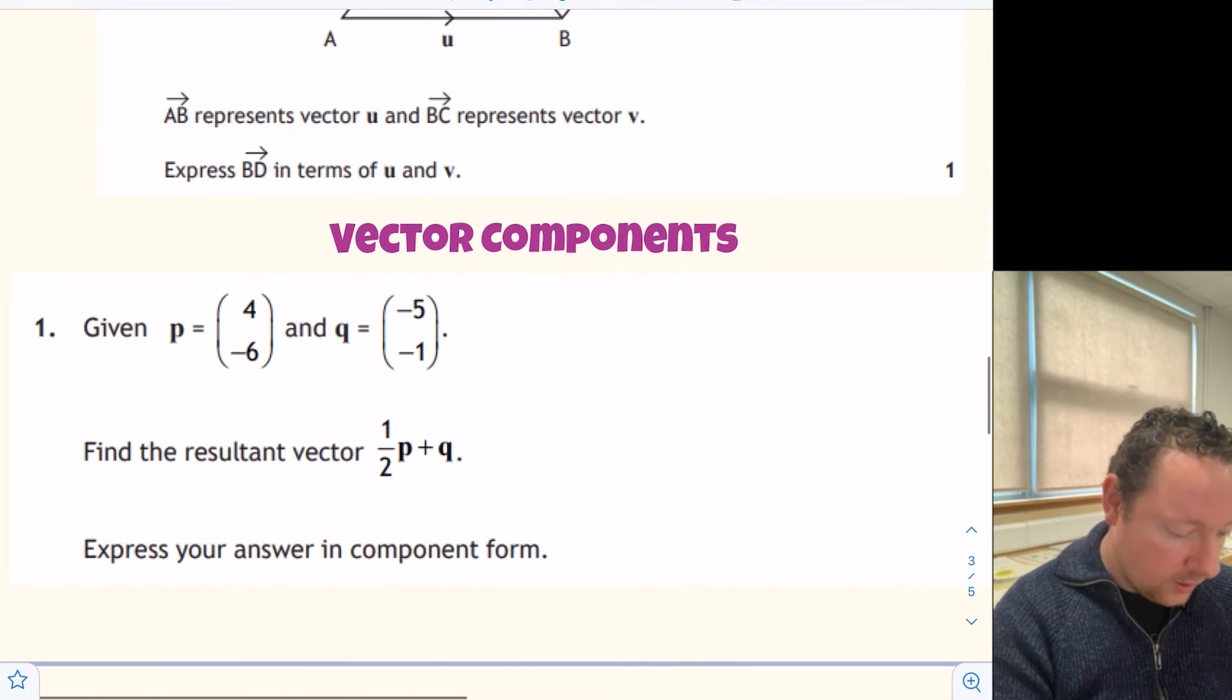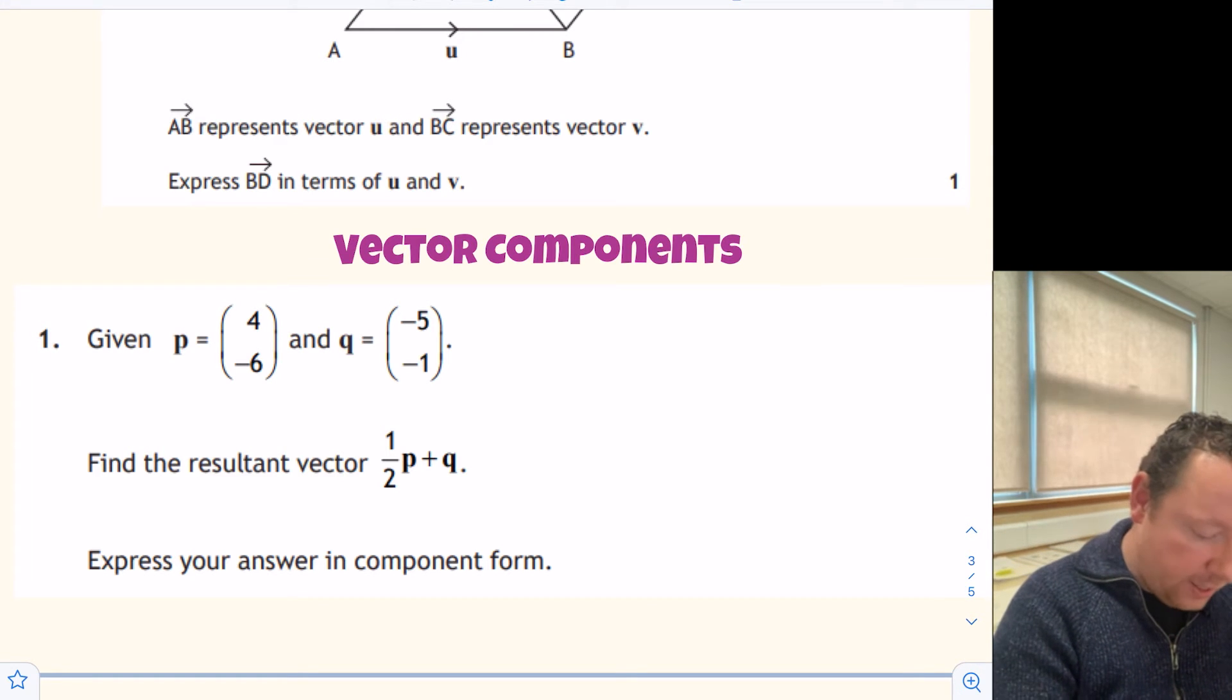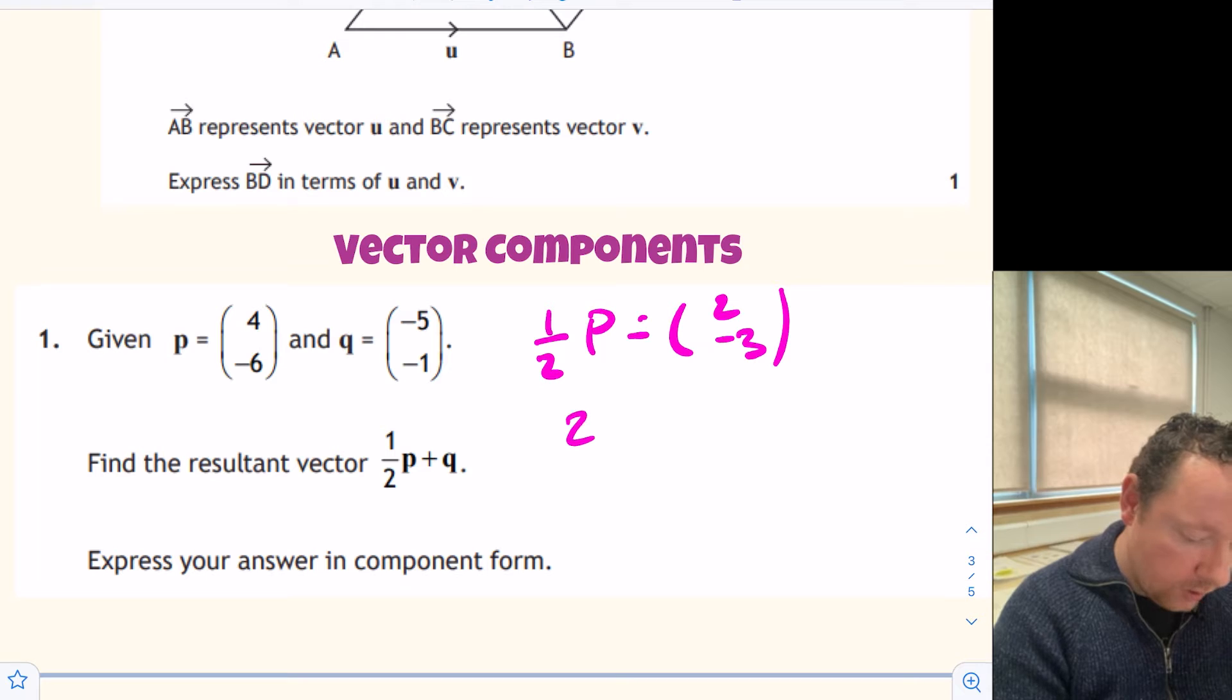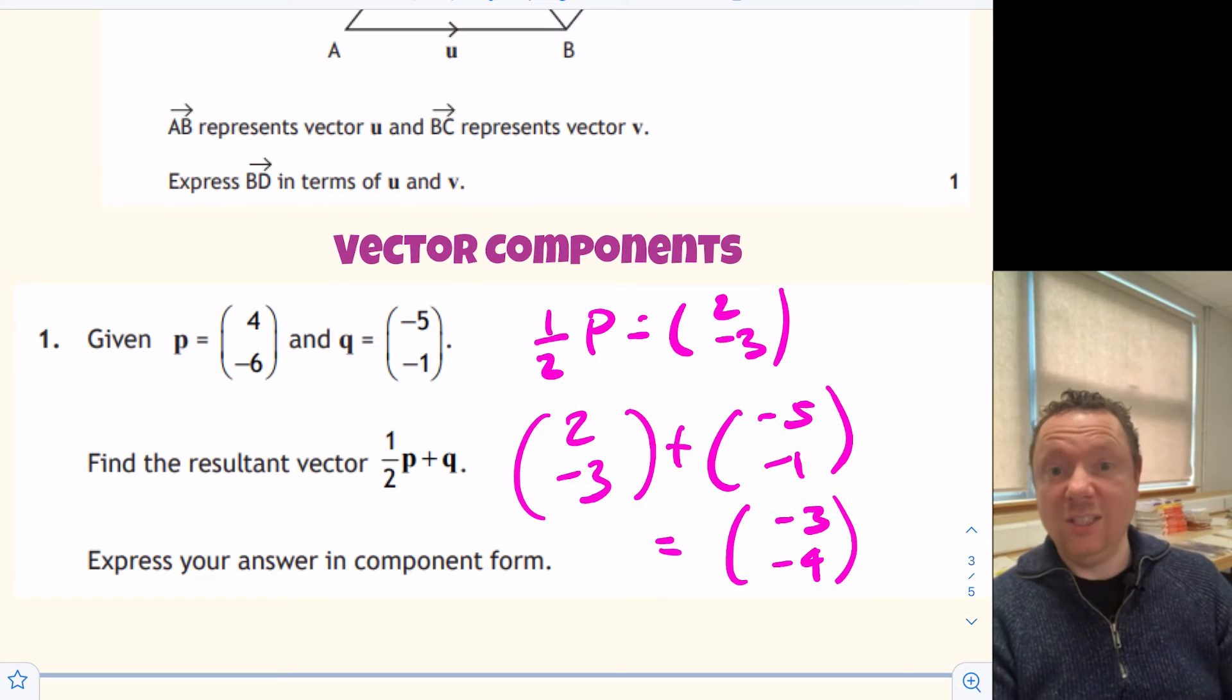The next one is Vector Components. Given that P and Q are these vectors, find a half P plus Q. This works the way you think it would work. You have the P, half the numbers and then you add the Q. So a half P is going to give me 2 and minus 3. And then we've got Q. So we've got 2 minus 3 plus minus 5 minus 1. 2 minus 5 is minus 3. Minus 3 plus minus 1 is minus 4. So there's the final answer.